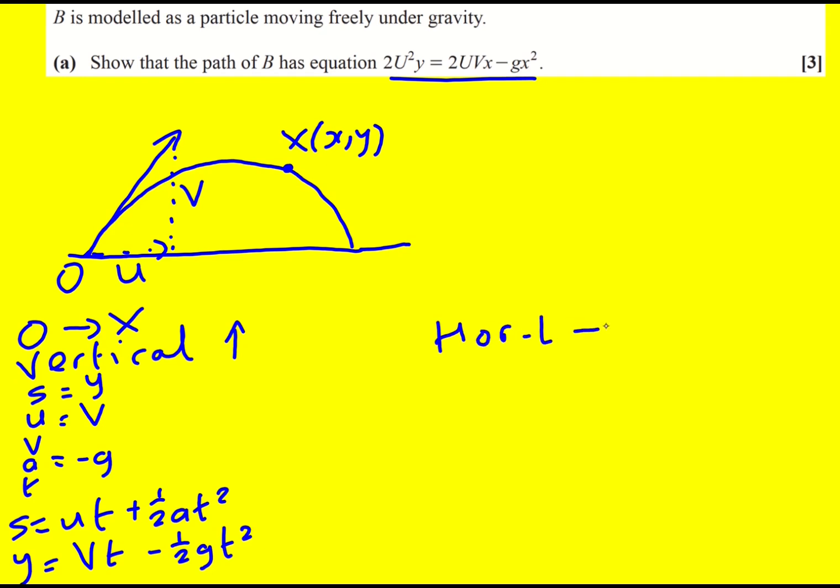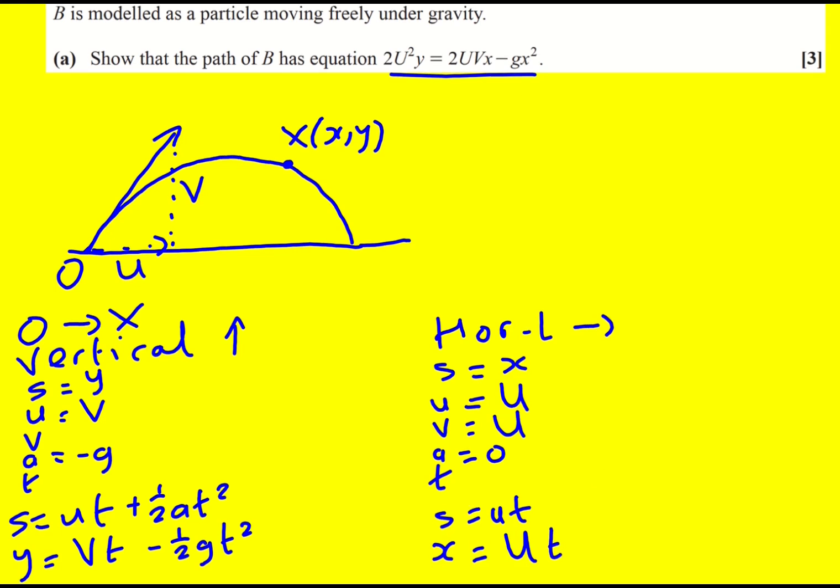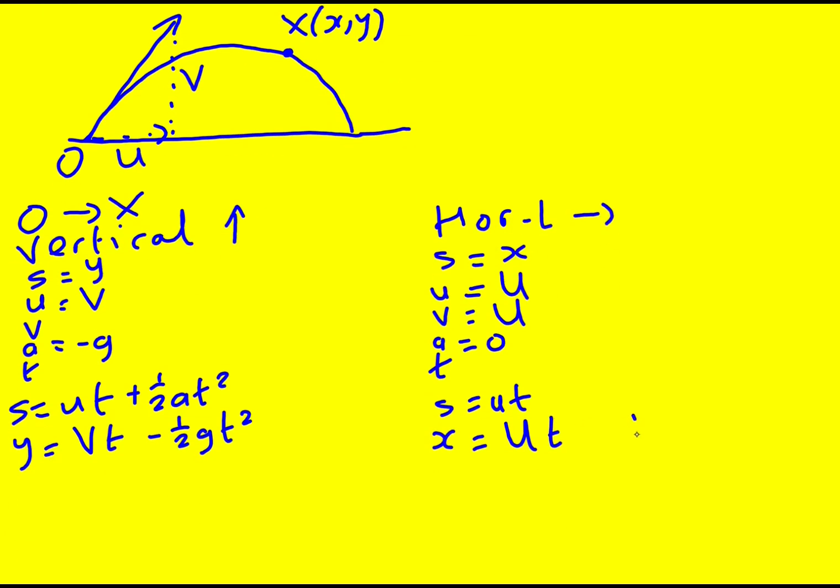Let's take a look at the horizontal to the right. So now the initial velocity is actually capital U, and the final velocity is also capital U because there's no acceleration. S is equal to x, so my s equals ut plus half a t squared simply becomes s equals ut. So s is equal to ut, and therefore x will equal U, capital U, T. So I'm trying to get an equation involving just x and y, and therefore it makes sense to make t the subject of this one rather than a quadratic. So t is going to equal x over U.